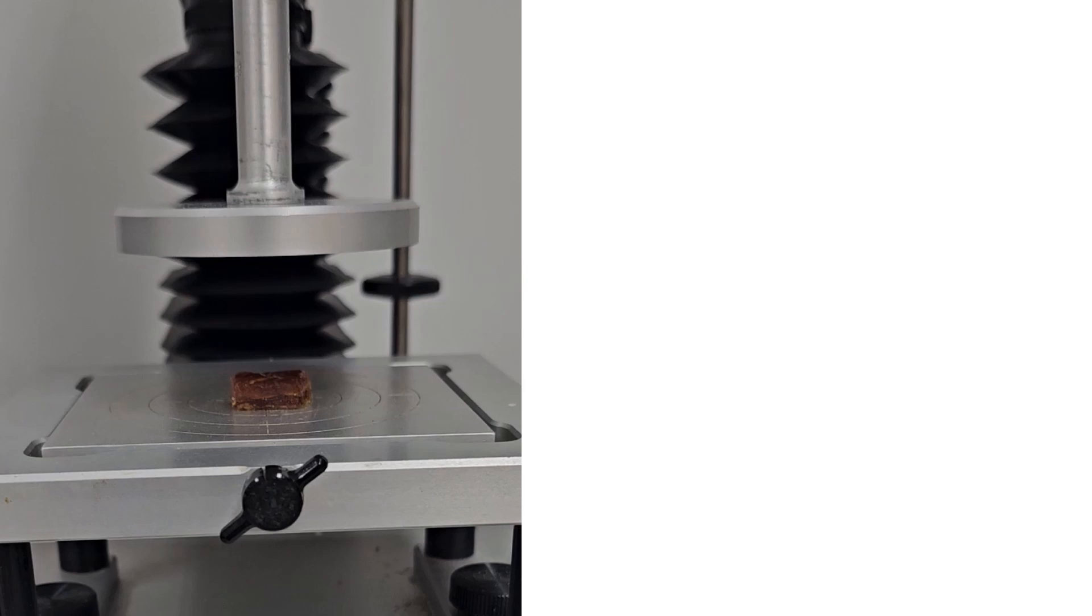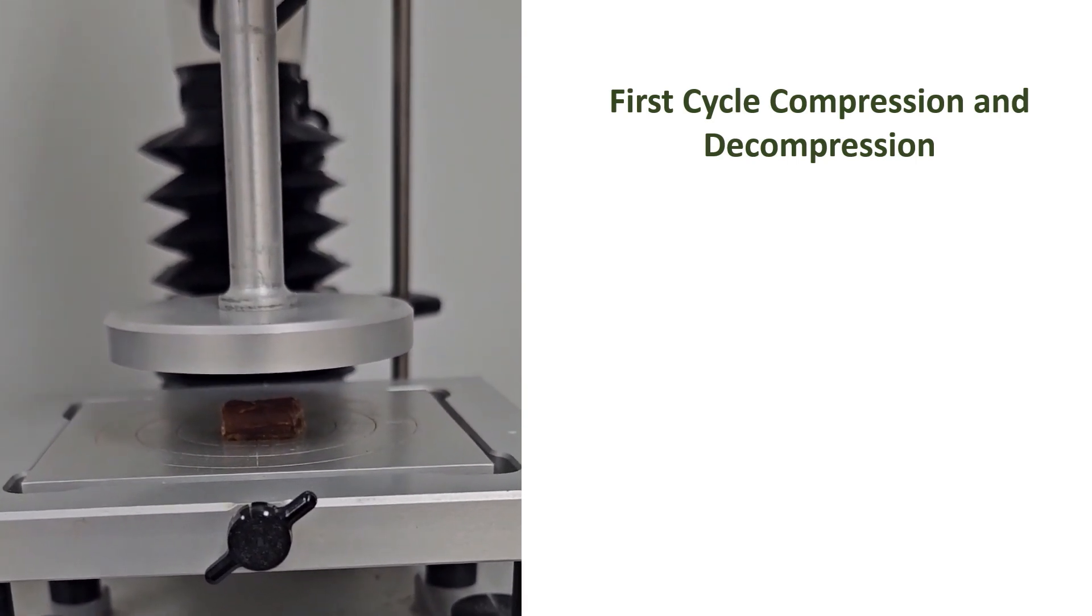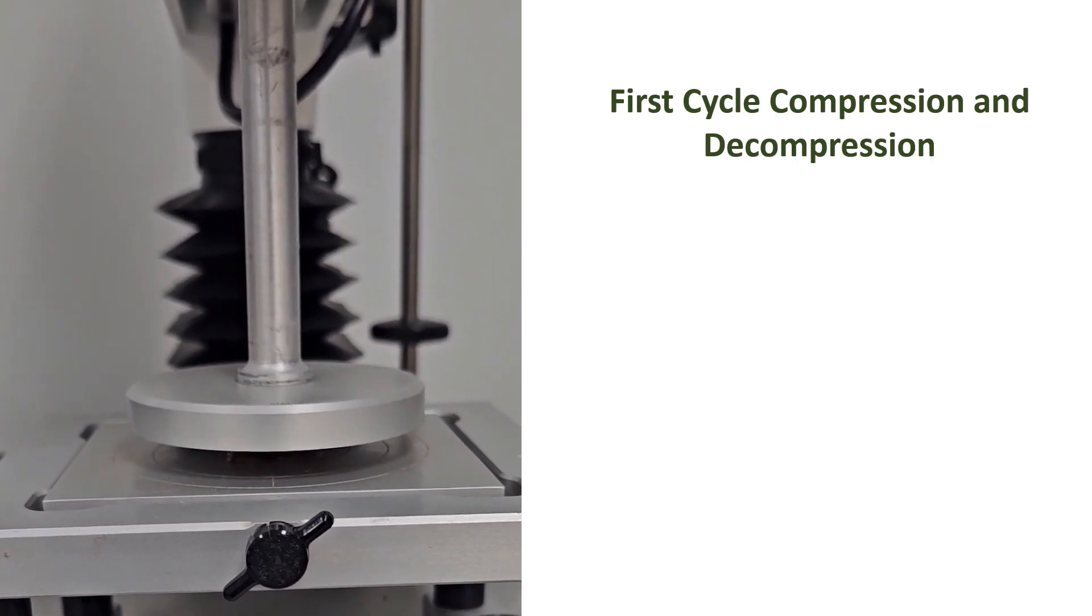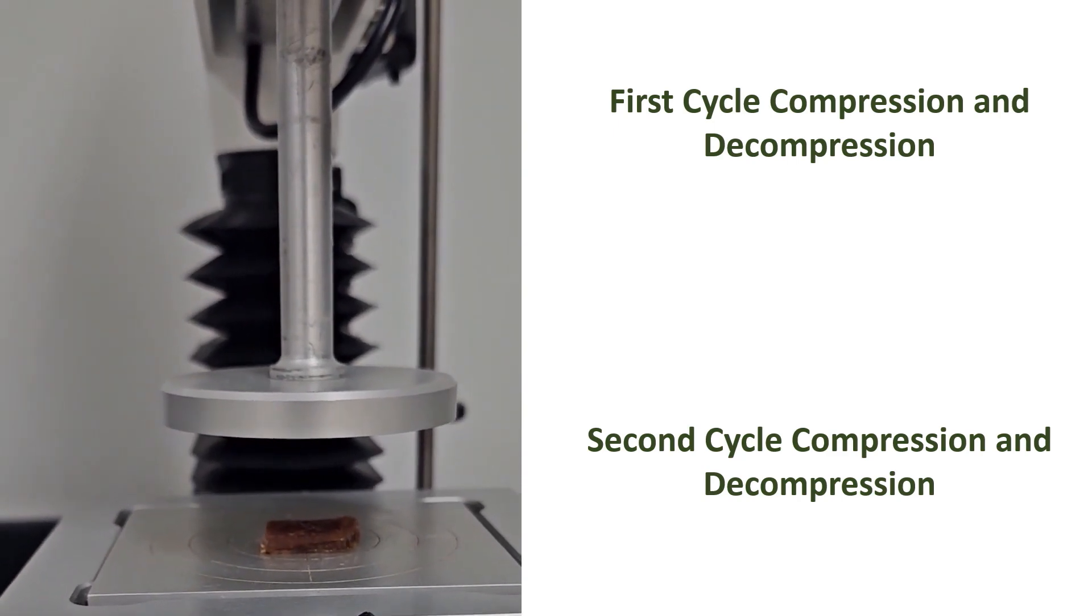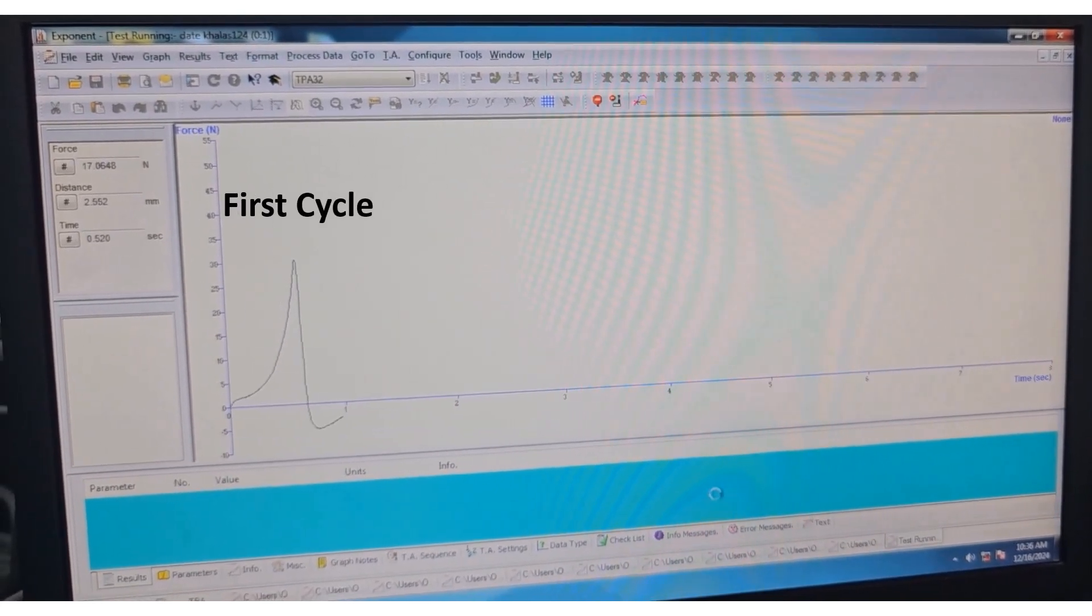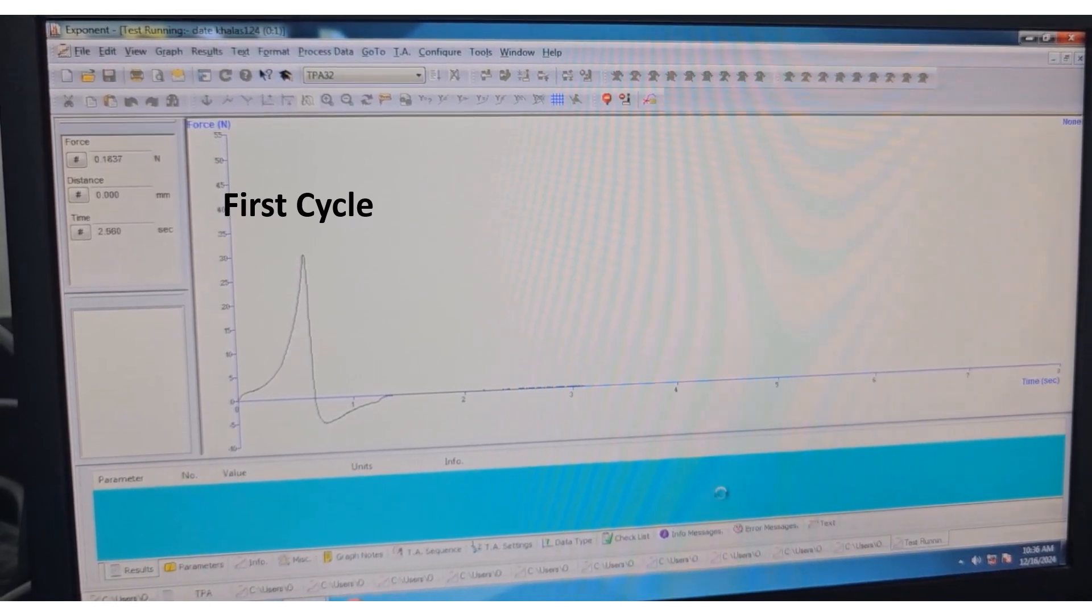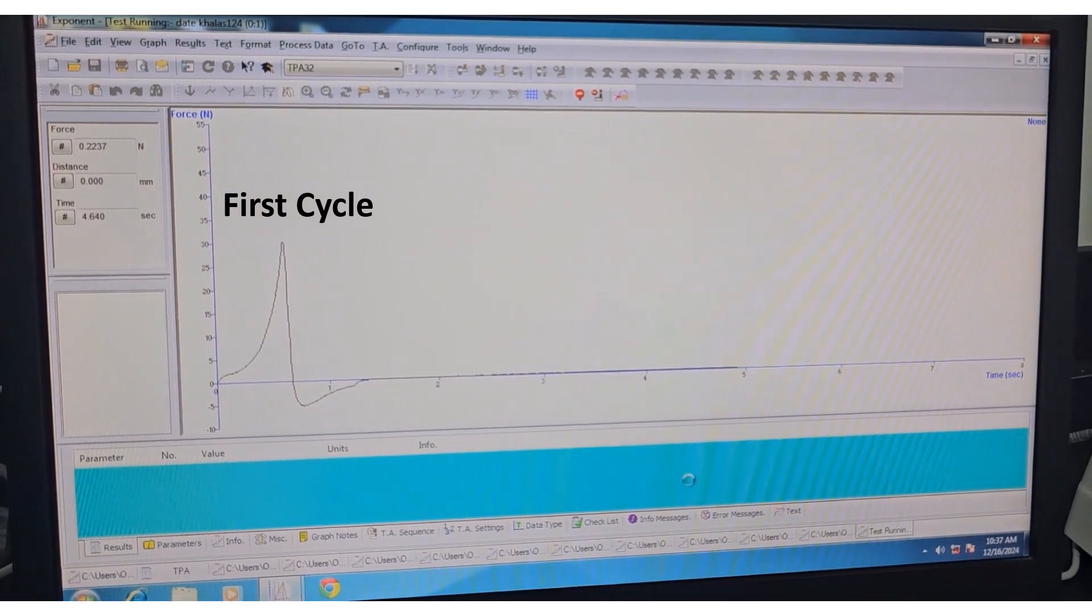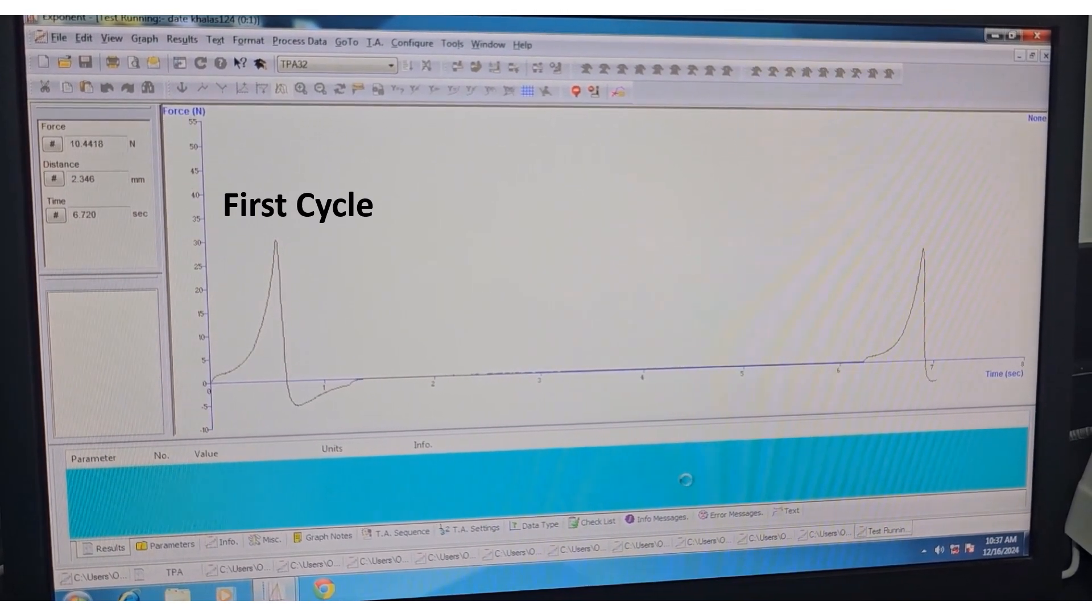First cycle compression and decompression. Second cycle compression and decompression. The force-time or force-distance graph is automatically shown on the computer. First cycle completed, holding, second cycle completed.